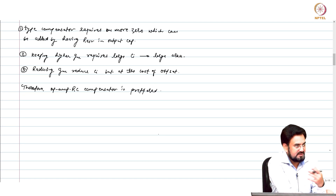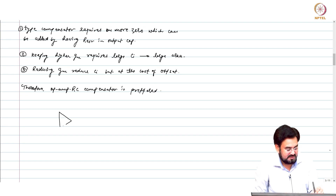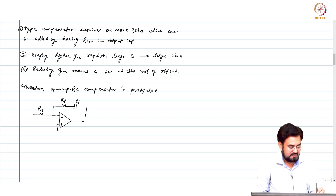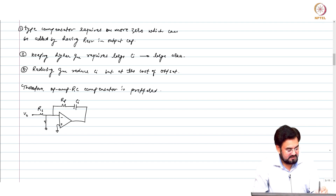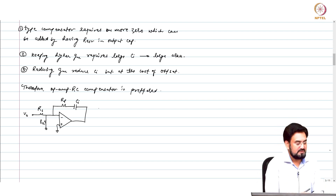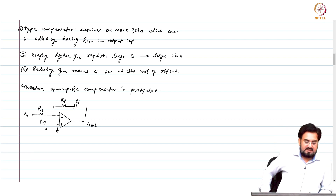Now we have to recalculate everything with op-amp. How do we do this with op-amp RC? It is quite simple — this is R1, I will call it Rp and you have Ci. And if you remember, this was nothing but your feedback resistor. So from V_out to your output, or this is V_control which is the output of your compensator, the transfer function remains the same.